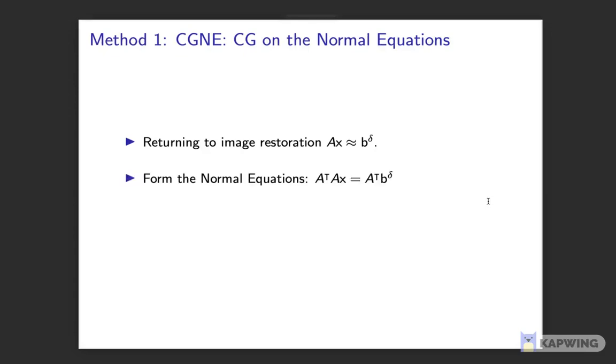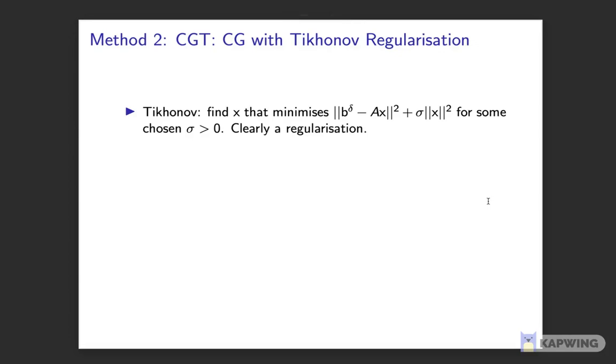So method one is CGNE, where we apply CG to the normal equations. A very important result of the project is that CGNE does indeed have regularizing properties. Method two, Tikhonov regularization, takes a different approach.